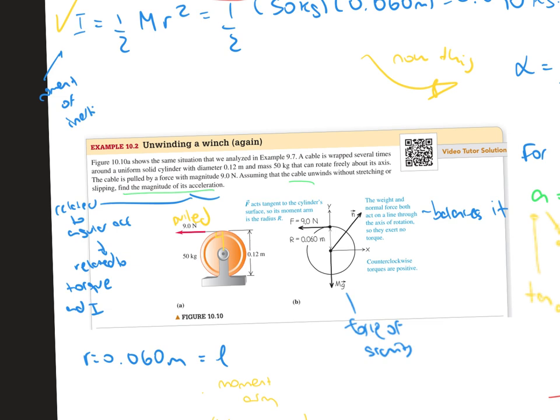The cable is pulled by a force with magnitude 9.0 newtons. Assuming that the cable unwinds without stretching or slipping, we have to find the magnitude of acceleration.